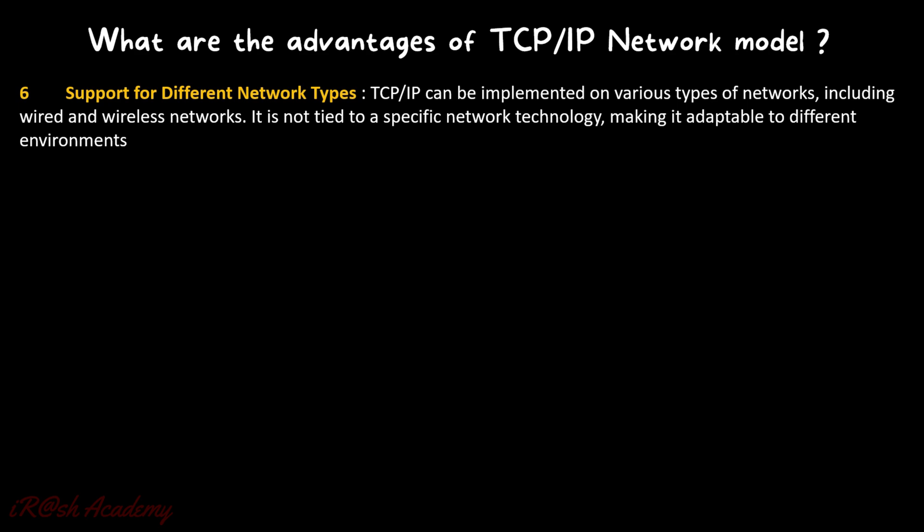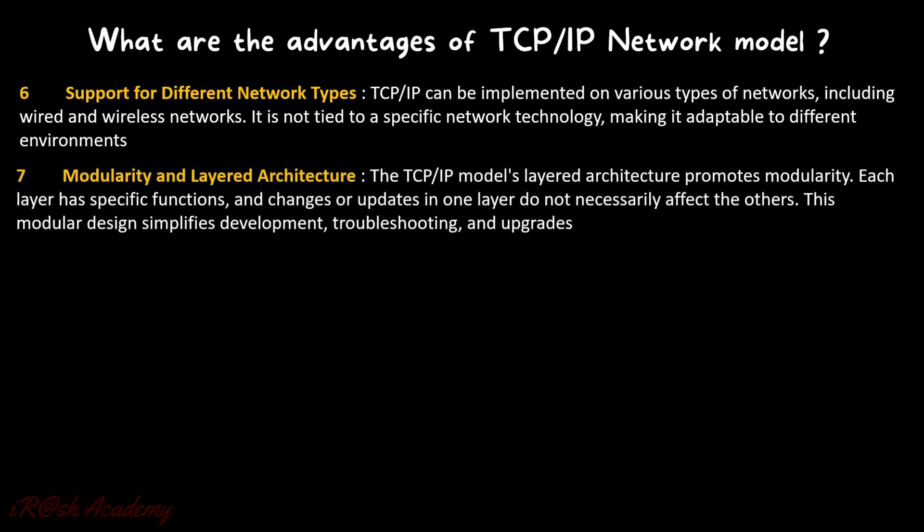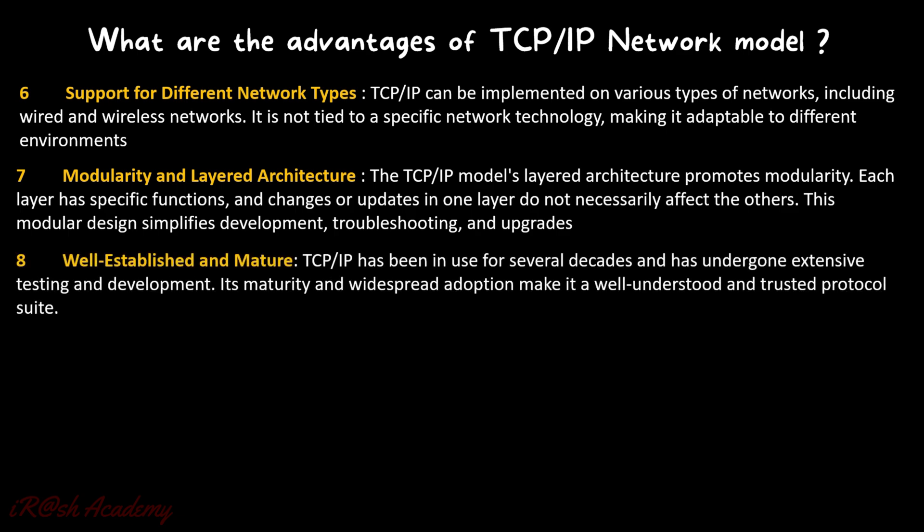Point six: support for different network types. TCP/IP can be implemented on various types of networks, including wired and wireless networks. It is not tied to a specific network technology, making it adaptable to different environments. Point seven: modularity and layered architecture. The TCP/IP model's layered architecture promotes modularity — each layer has specific functions, and changes or updates in one layer do not necessarily affect others. This modular design simplifies development, troubleshooting, and upgrades. Point eight: well established and mature. TCP/IP has been in use for several decades and has undergone extensive testing and development. Its maturity and widespread adoption make it a well-understood and trusted protocol suite.